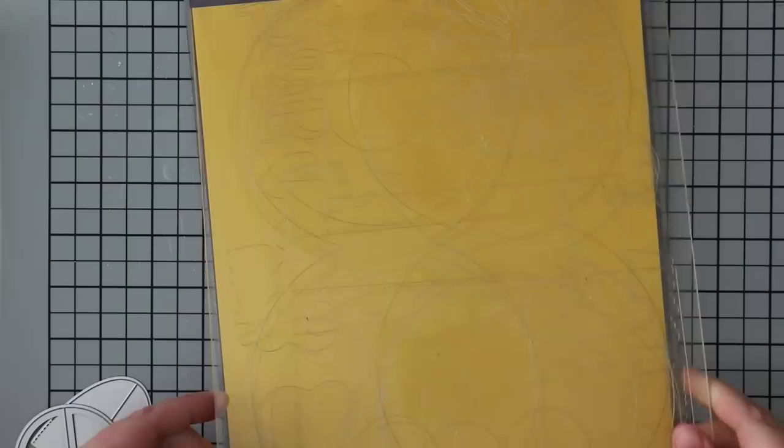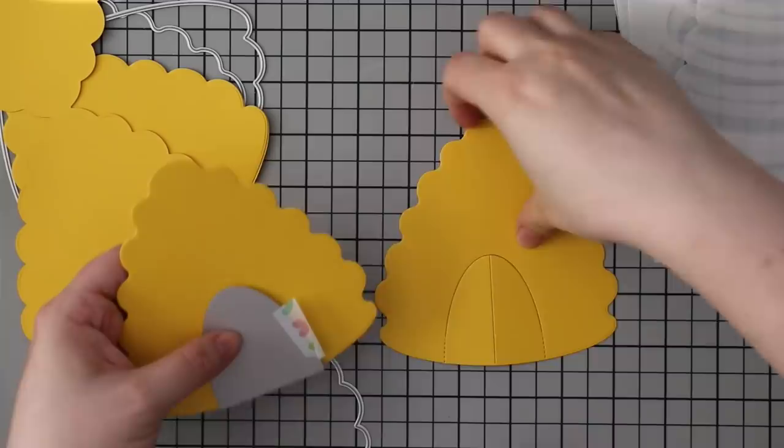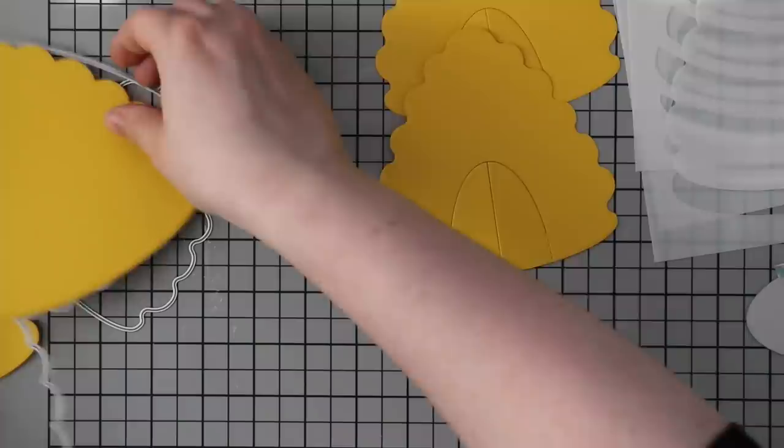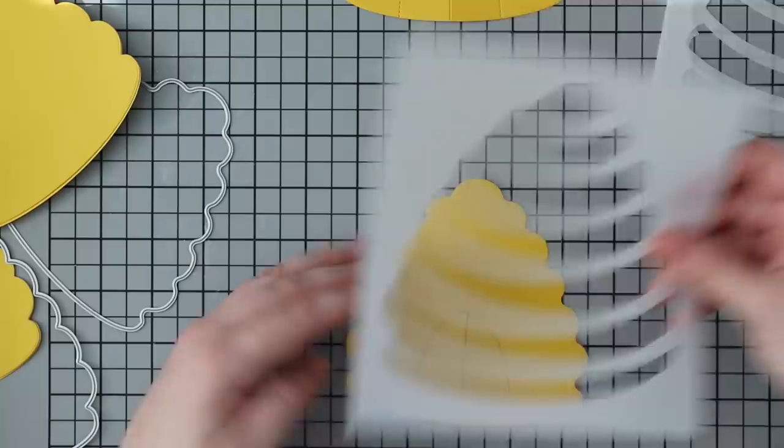Anyhow, this wafer die is huge, so I'm using my big Gemini plates that are 9 by 12 because the beehive card itself, the wafer die, is like 9 inches by 5.5 inches. So it cuts out the base.